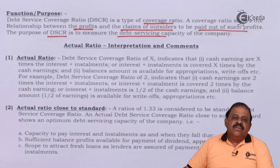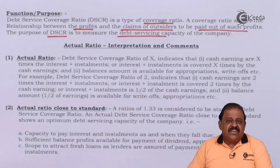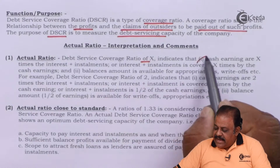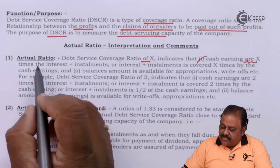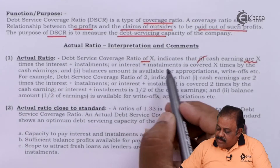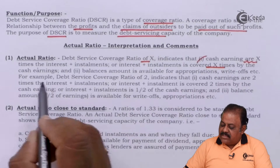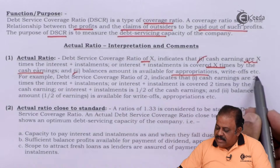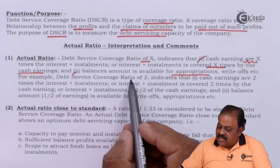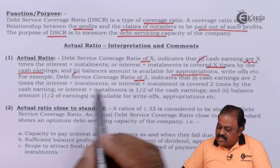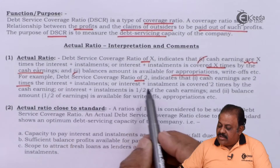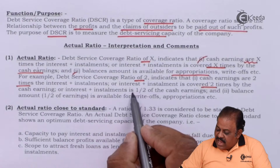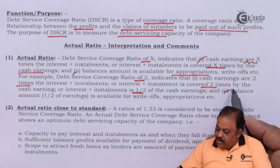The purpose of the debt service coverage ratio is to measure the debt servicing capacity of the company. A ratio of X indicates that cash earnings are X times the interest plus installment, and the balance amount is available for appropriation and write-offs. For example, a ratio of 2 indicates that cash earnings are 2 times the interest plus installment, and interest and installment is half of cash earnings.